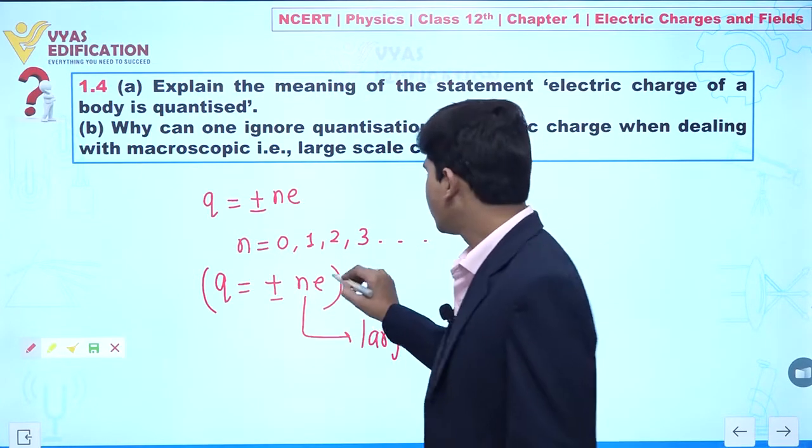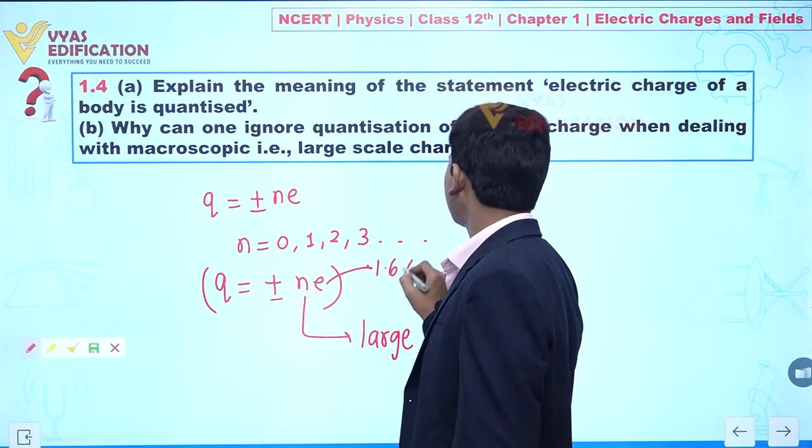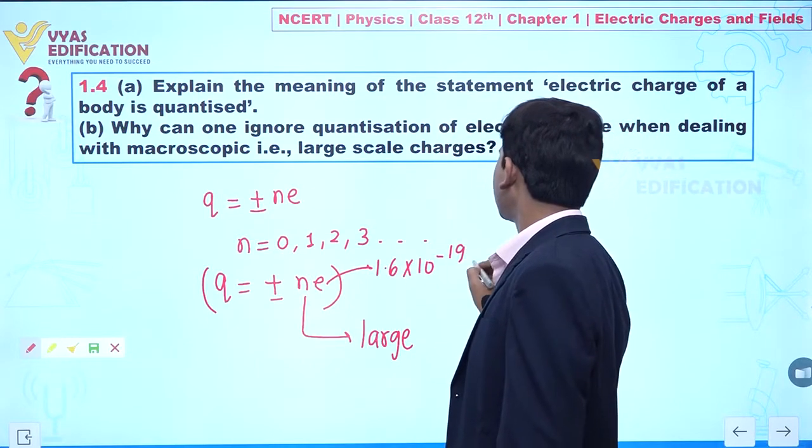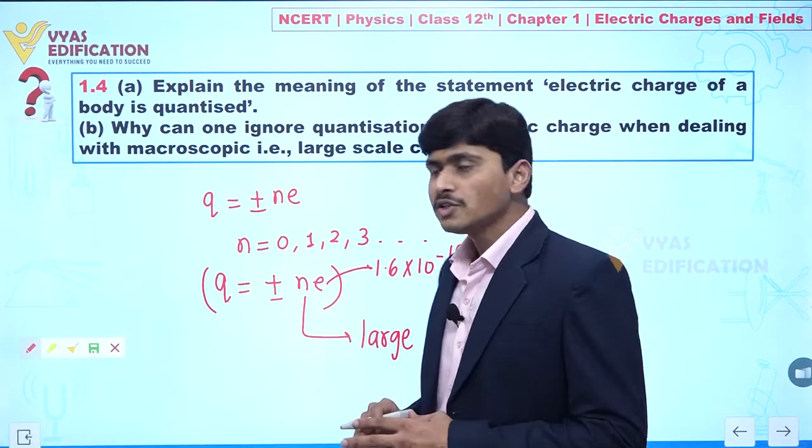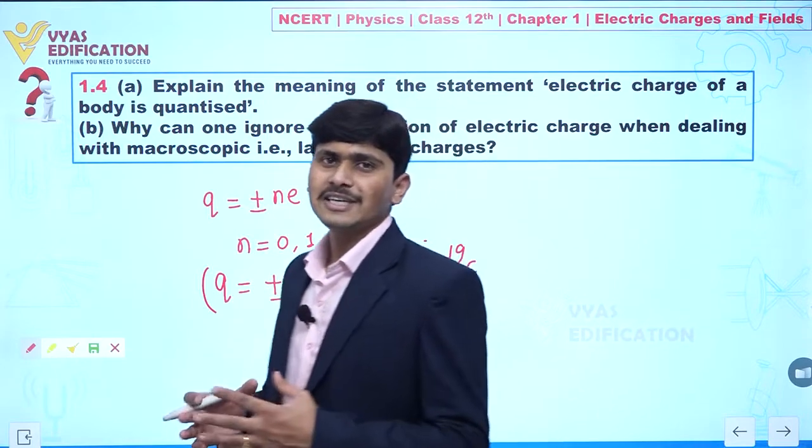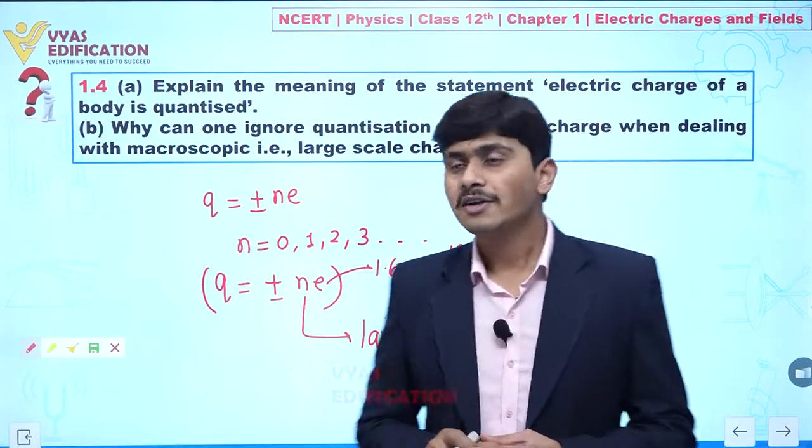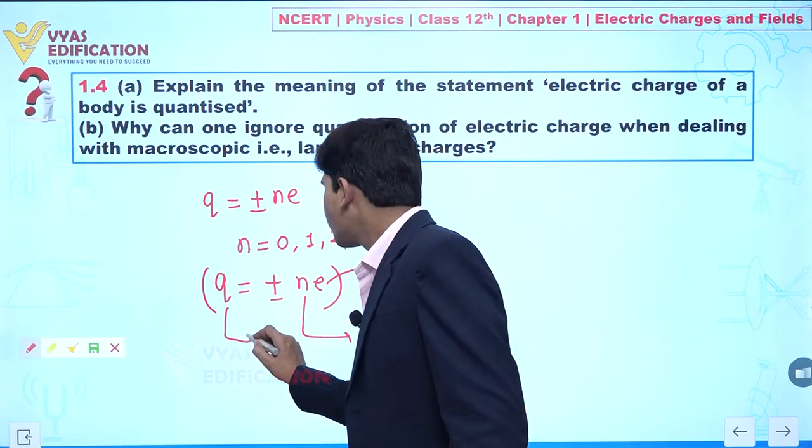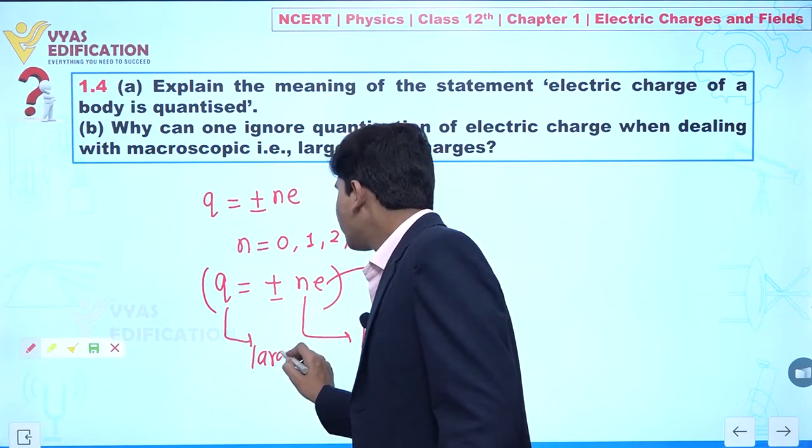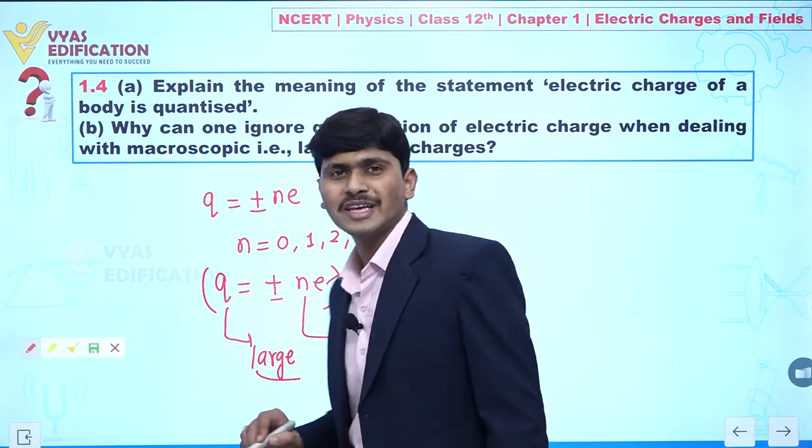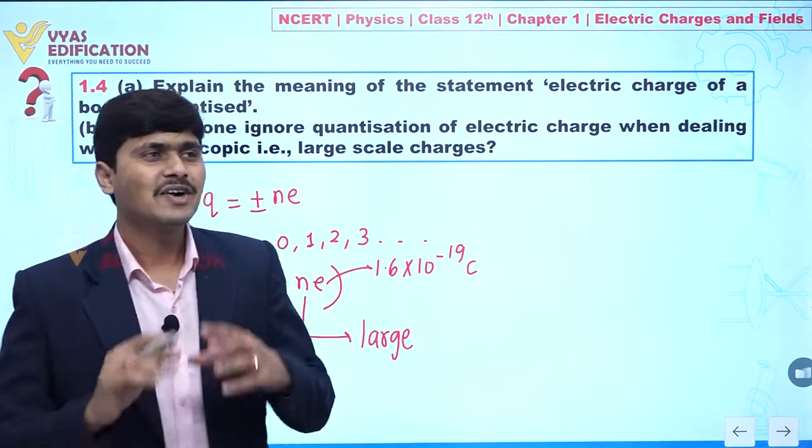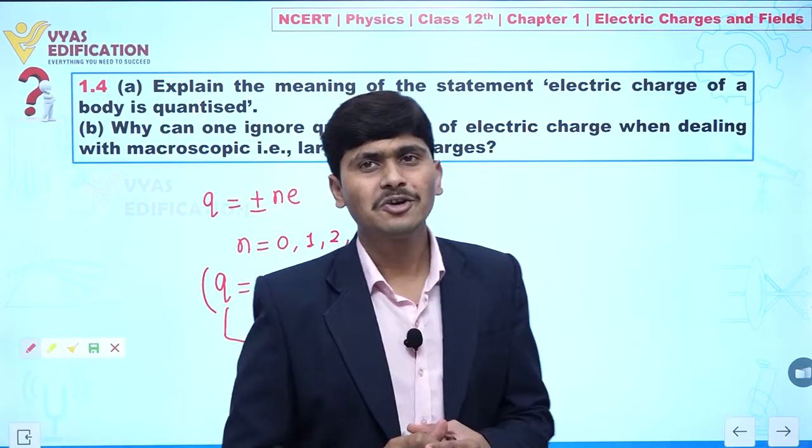And we know, the charge of one electron, we have 1.6 into 10 to the power minus 19 coulomb. So, actually, in electric charges and field, we are dealing with the charge, that is point charge. But, when we get value of Q, this is large, at that time, the charge becomes continuous. And we can say, the quantization of an electric charge, we cannot apply on it.